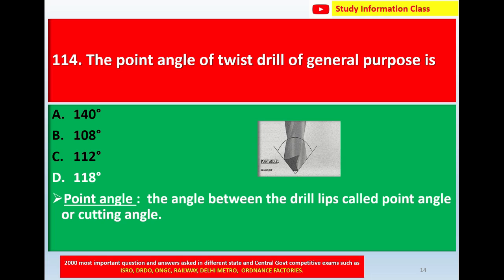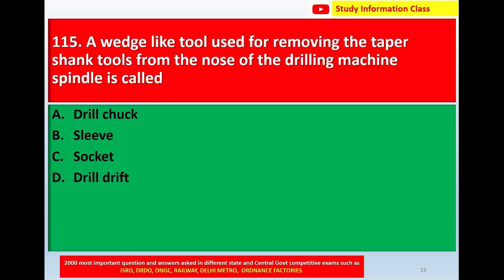The point angle of a twist drill for general purpose is 118 degrees. So for question number 114, the correct answer is Option D, 118 degrees. Next, question number 115: a wedge-like tool used for removing the taper shank tools from the nose of the drilling machine spindle is called —